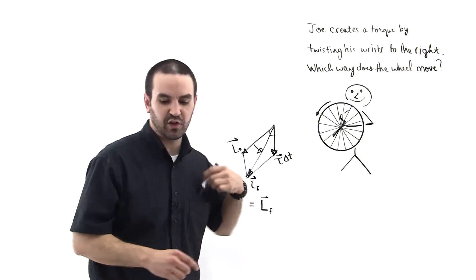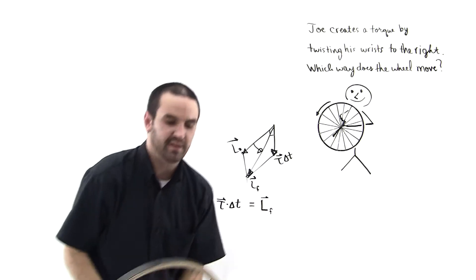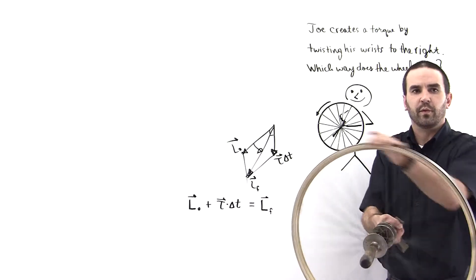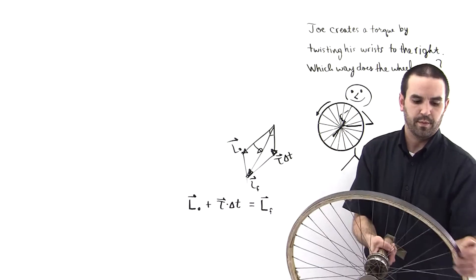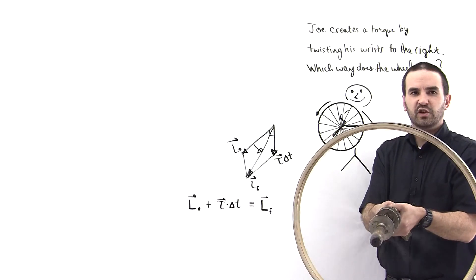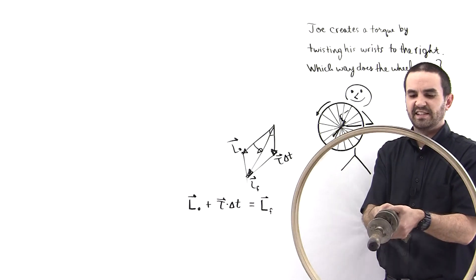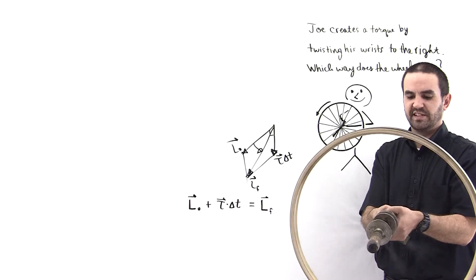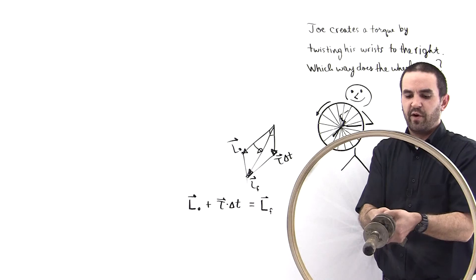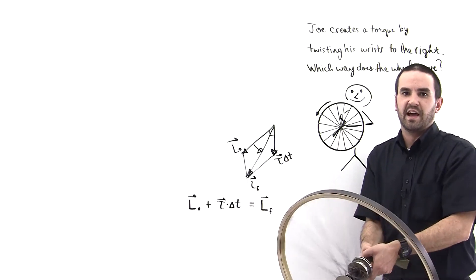So the answer is down. Let's verify it. Let's see. We've got this spinning wheel. It's rotating. Now I'm going to twist my wrist to the right just in an instant. I'm just going to give it a torque impulse and see what happens. So I'm just going to twist it to the right and you see that it goes down.